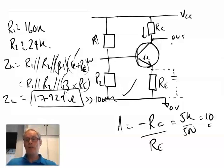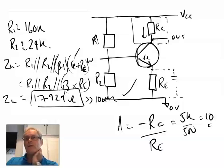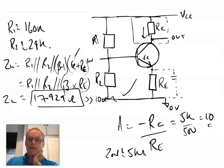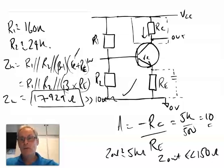Finally, looking at the AC model for output impedance, Zout is dictated by the RC resistor. In our case, Zout ≈ 5 kilohms — which is a problem, because the spec requires Zout to be less than 150 ohms. So we'll need to look at that next.